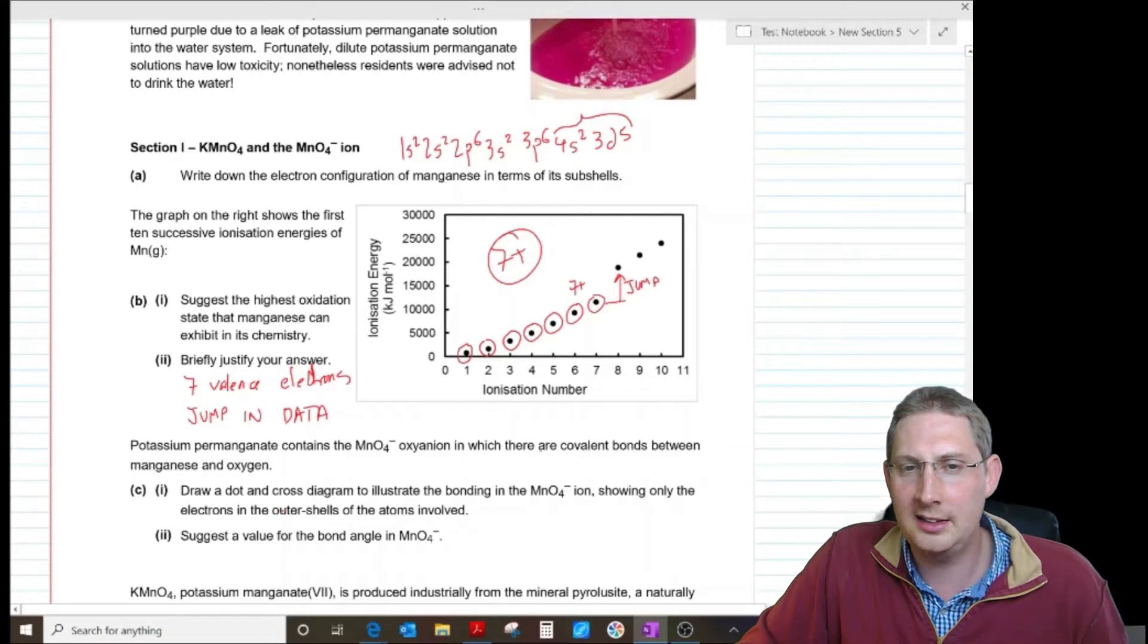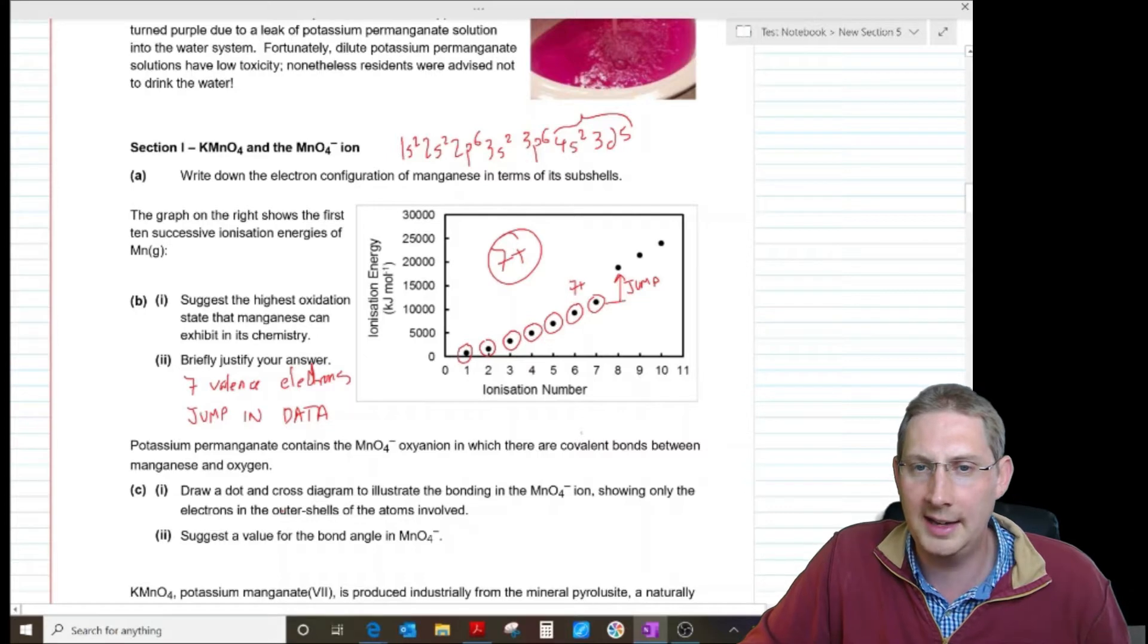4s2, 3d5, they're the valence electrons. It's got seven of them or maybe they're wanting us to say that there's a jump in the data. We wouldn't know without looking at the mark scheme. Potassium permanganate contains the manganate oxyanion, which there are covalent bonds between manganese and oxygen. Draw a dot cross diagram to illustrate the bonding in manganate showing only the electrons in the outer shell.